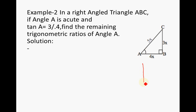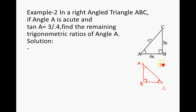Let us see the next problem. In a right-angle triangle ABC, if angle A is an acute angle — meaning less than 90 degrees — and tan A equals 3 by 4, find the remaining trigonometric ratios of angle A. In some types of questions they may not give you the diagram of the triangle, so we have to construct the diagram. Let us learn right from the basics how to construct that diagram and find the remaining values.